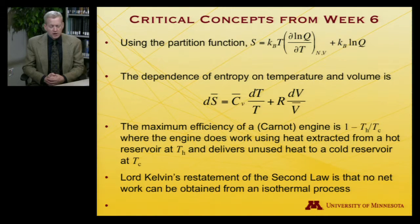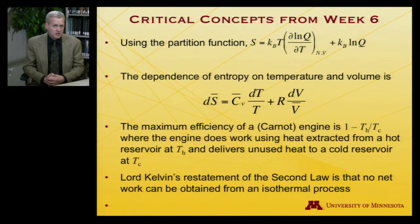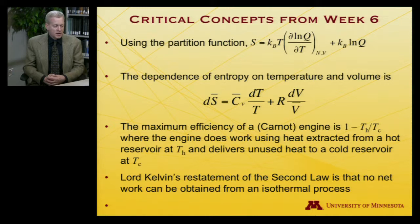We also looked at a Carnot engine as an example of a process using an ideal gas to turn heat energy into work. We discovered that the maximum efficiency of such an engine is 1 minus Tc over Th, where Th is the temperature of a hot bath from which heat is extracted in order to do work, and Tc is the temperature of a cold bath into which heat is dumped.